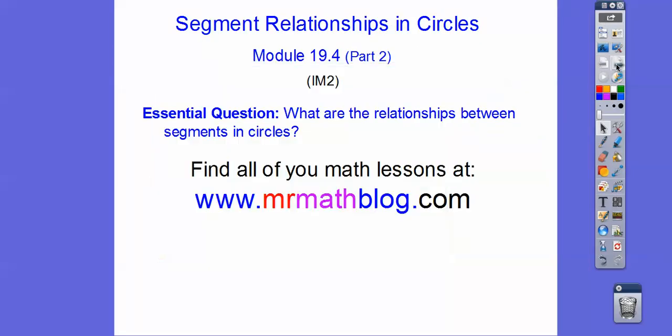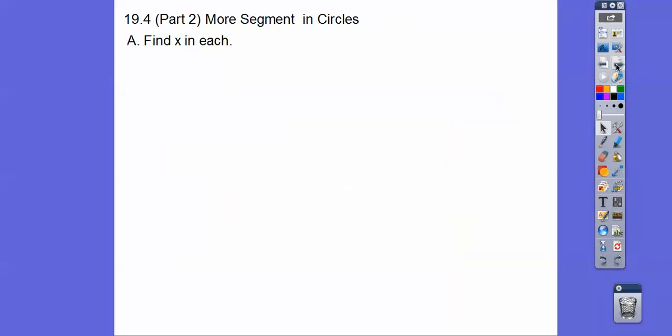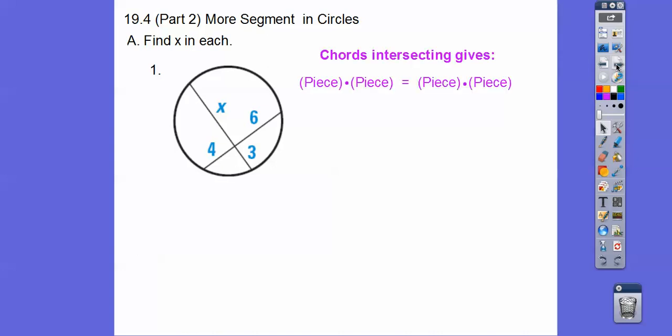So find x in each. When they're intersecting chords, then it's piece times piece equals piece times piece. So 3 times x equals 4 times 6 and we get x equals 8.